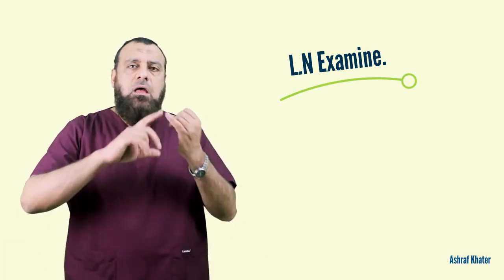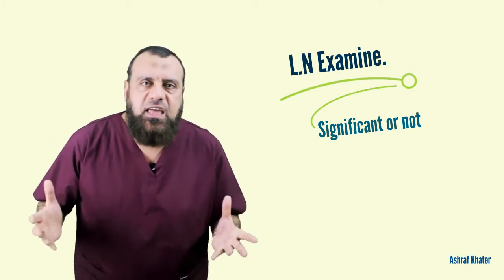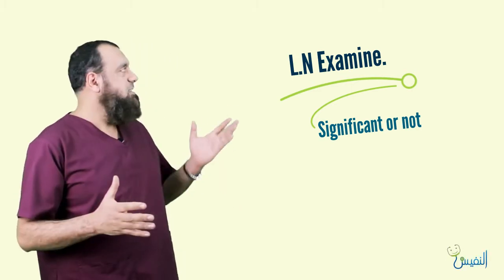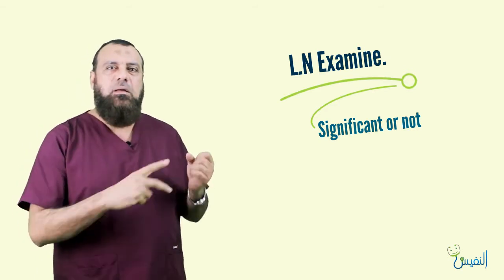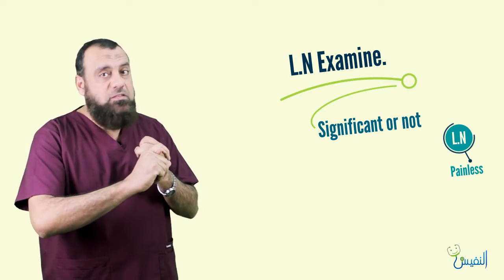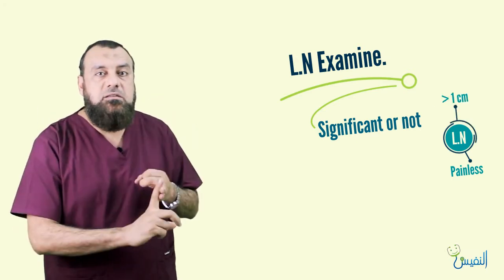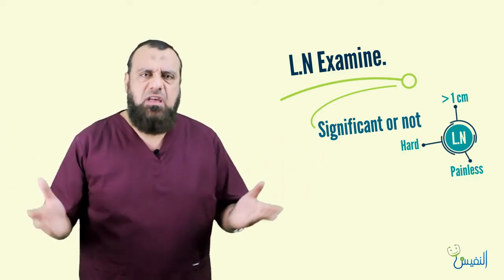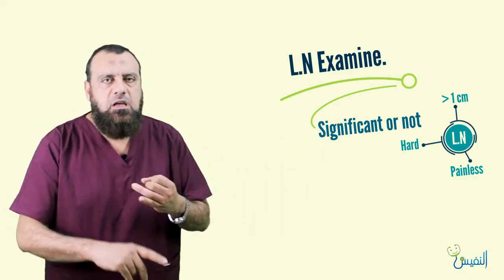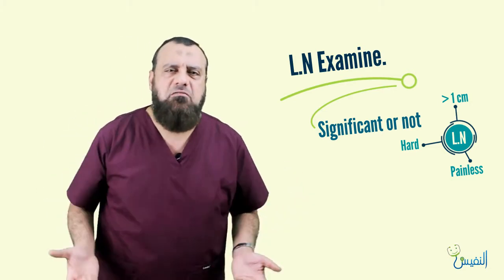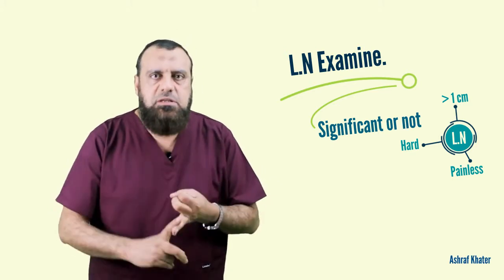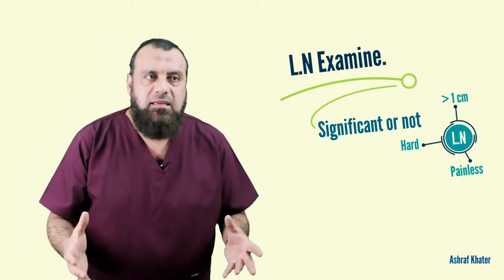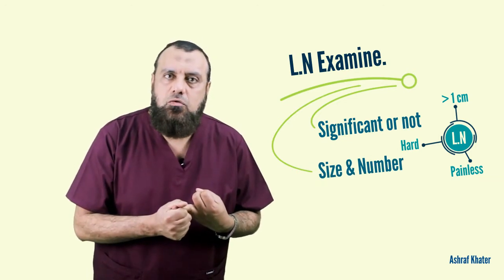When palpating lymph nodes, determine whether they are significant or not. A significant lymph node is suspicious for malignancy. The triad of a suspicious lymph node is: number one, painless and not tender; number two, more than one centimeter; number three, hard in consistency. An insignificant lymph node is tender, below one centimeter, and soft or firm — usually inflammatory.